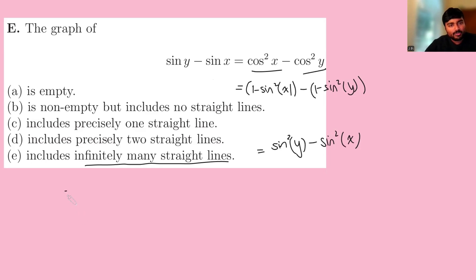We can apply the difference of two squares. So we have sine y minus sine x equals sine y minus sine x times sine y plus sine x, like so.